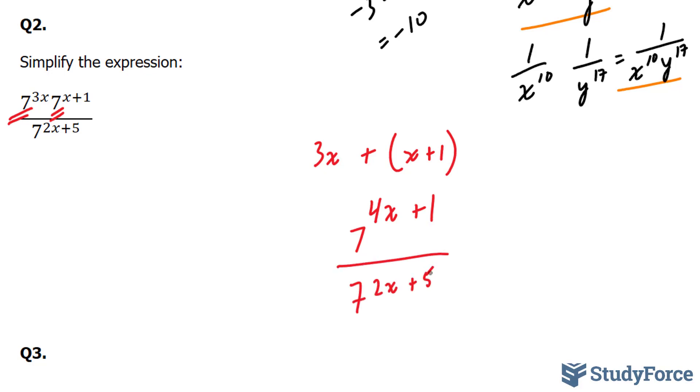And for our next step, and our last step, we will use the quotient rule. And the quotient rule says that if the bases are the same, and they are, you will be subtracting the exponents. So let's do this up here. 4x plus 1. And do not make this mistake. Make sure that when you subtract this from this, you put it in brackets. And if you don't, you'll get the wrong answer.